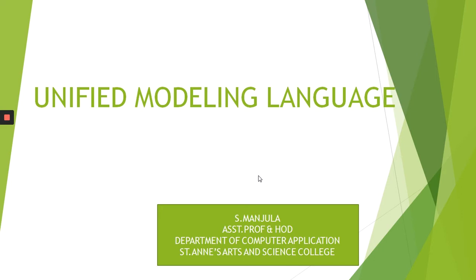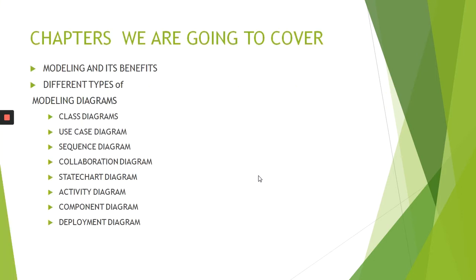Today we are going to see the topic Unified Modeling Language. This chapter we are going to cover modeling and its benefits, and different types of diagrams such as class diagram, use case diagram, sequence diagram, collaboration diagram, state chart diagram, activity diagram, component diagram and deployment diagram.